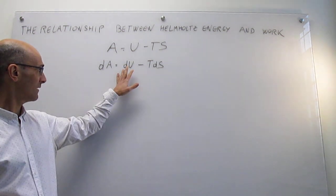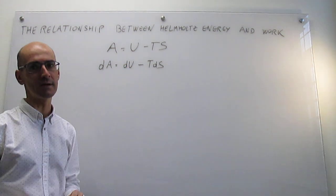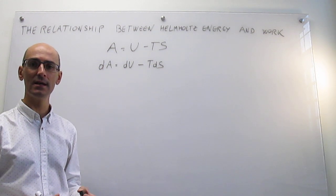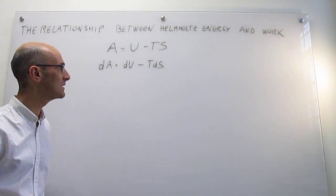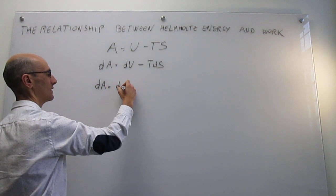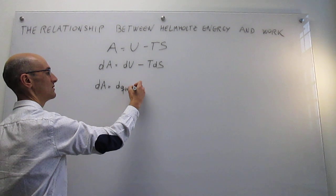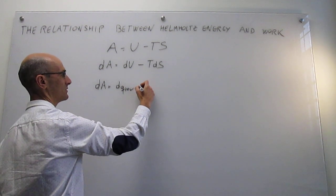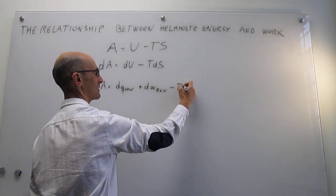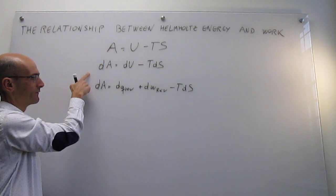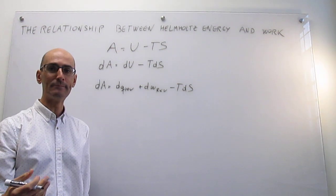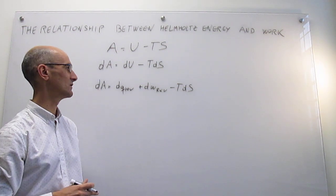So now what we're going to do is take the definition of the first law of thermodynamics. We know how the internal energy is related to the heat and the work transfer in a given process. Under reversible conditions, what we can say is the differential of A is going to be the heat evolved under reversible conditions plus the work evolved under reversible conditions minus T times the differential of S. The only thing we've done is plug in the first law and apply reversible conditions.